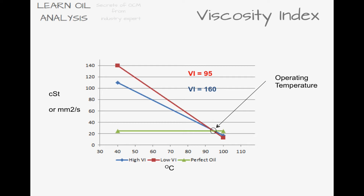The viscosity index is measured using viscosity at 40 and 100 degrees Celsius. Viscosity needs to be sufficient to separate surfaces at operating temperature, which for example in an engine could be around 95 degrees Celsius. Whereas at startup in winter, the oil could be very thick and gloopy, making the engine hard to start and also wasting energy whilst the oil warms up.